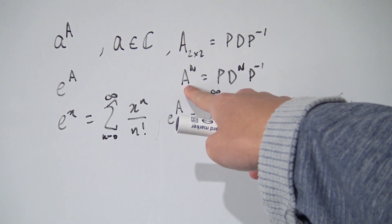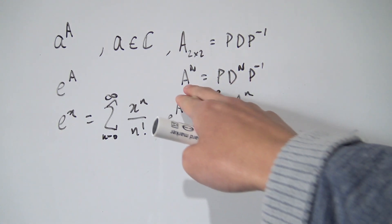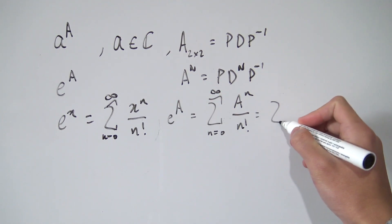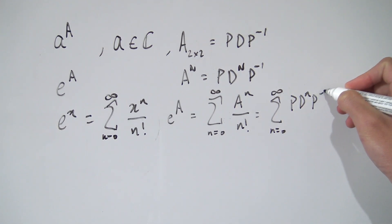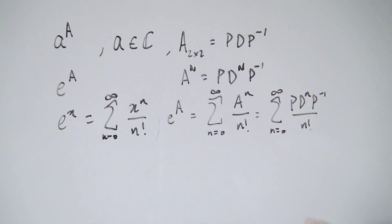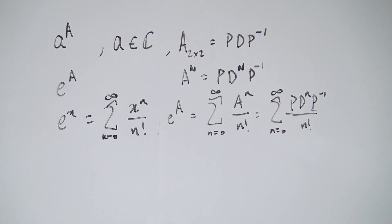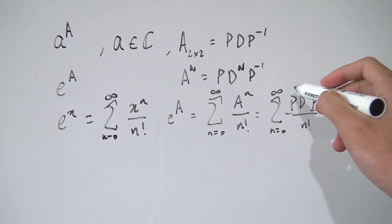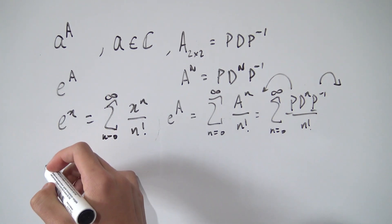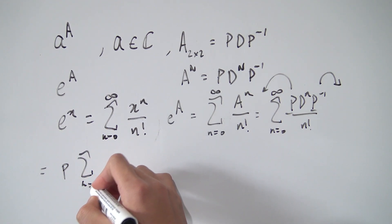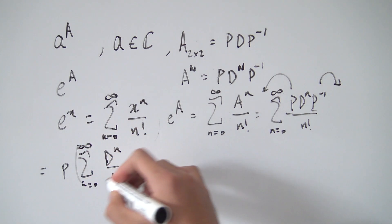Since A is diagonalizable and A to the n equals P D to the n P inverse, we substitute this into the sum to get the sum from n equals 0 to infinity of P D to the n P inverse over n factorial. Because P and P inverse are constants with respect to n, we can factor them outside the sum, giving us P times the sum from n equals 0 to infinity of D to the n over n factorial, times P inverse.